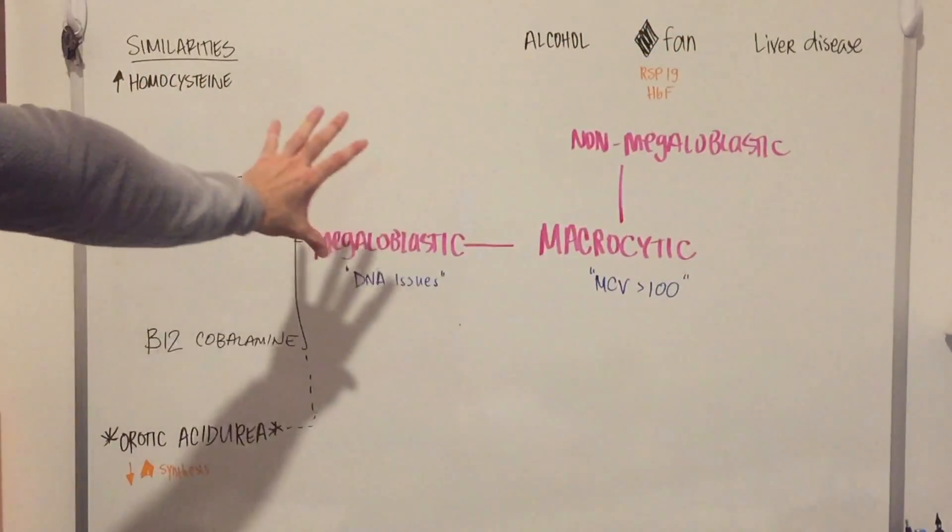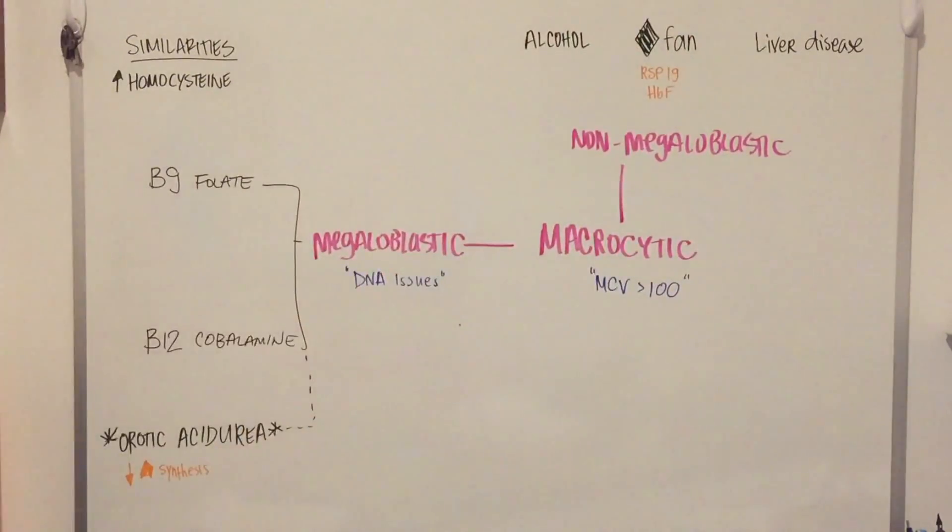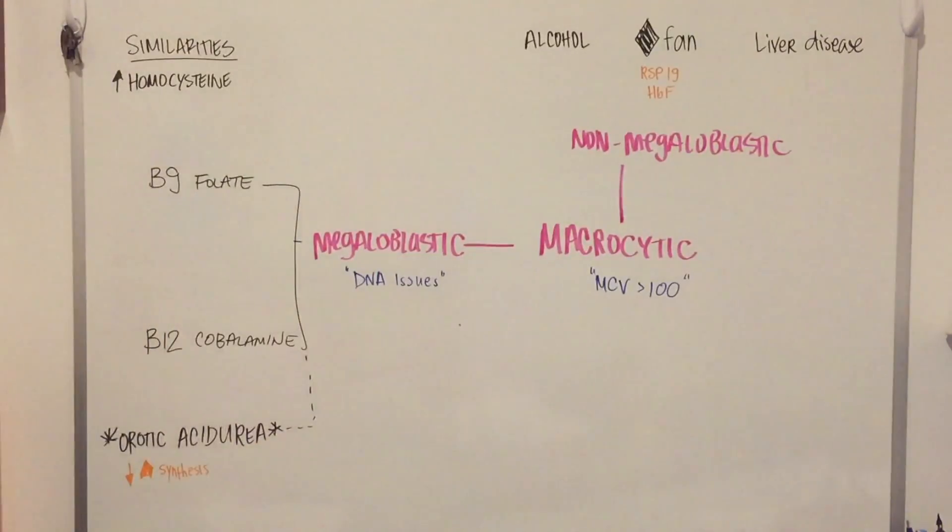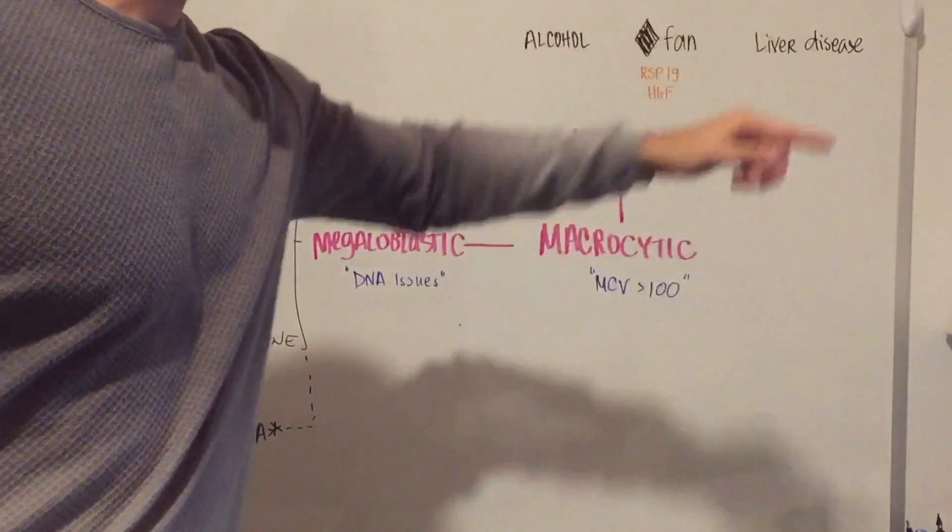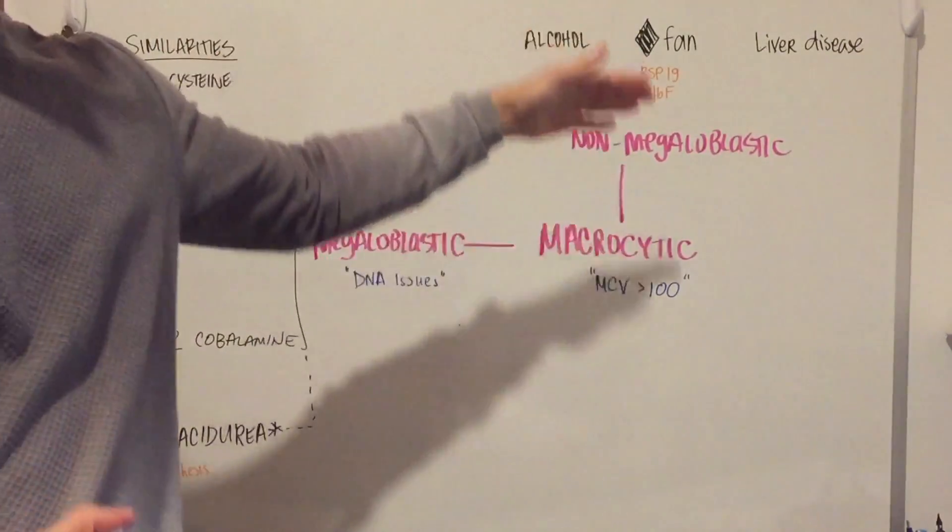Before we get into the main megaloblastics, I just want to briefly touch on the three most common forms that you're going to see non-megaloblastic macrocytic anemia. That's alcoholism, Diamond-Blackfan, and liver disease. Diamond-Blackfan also just uniquely hits RBC precursors, specifically targeting RSP19.